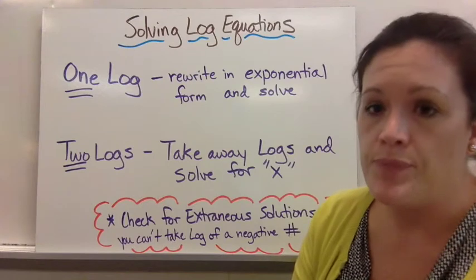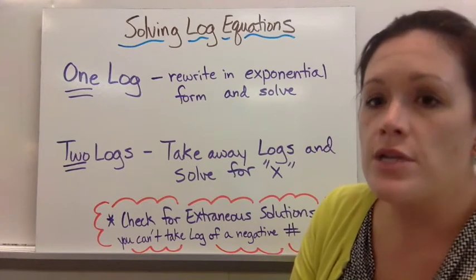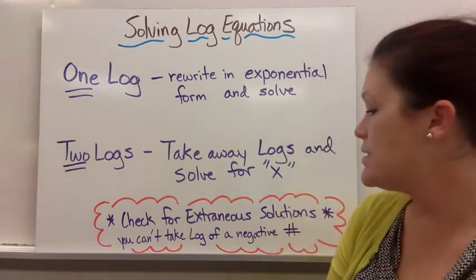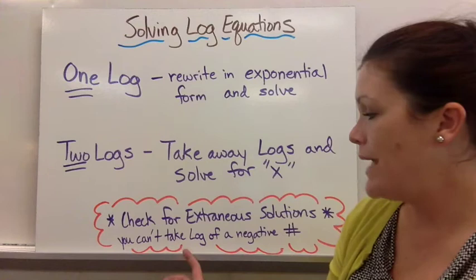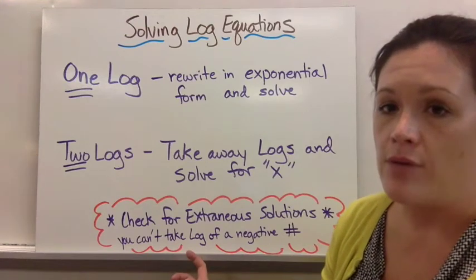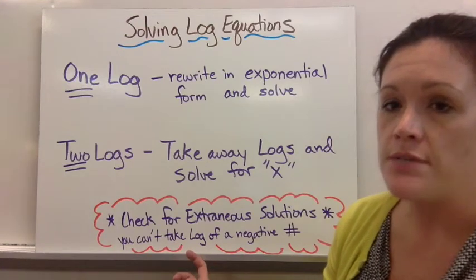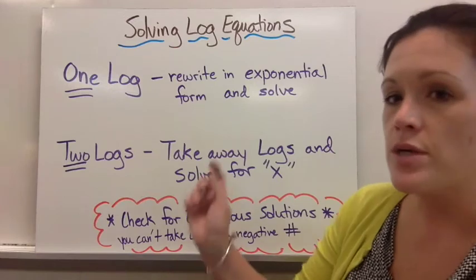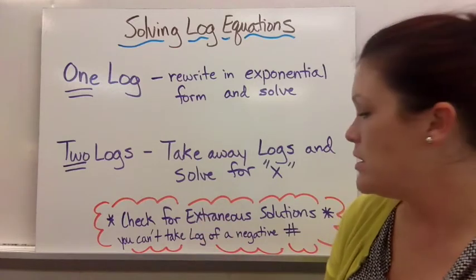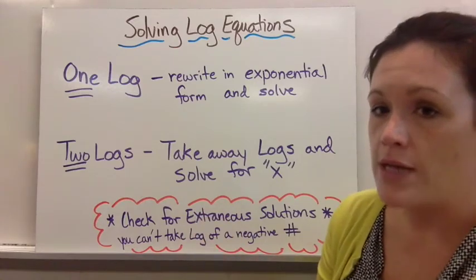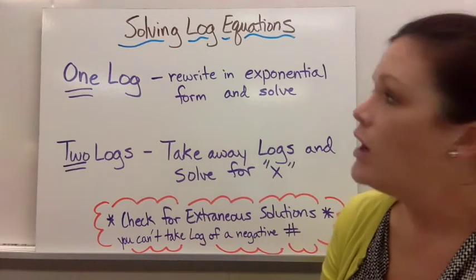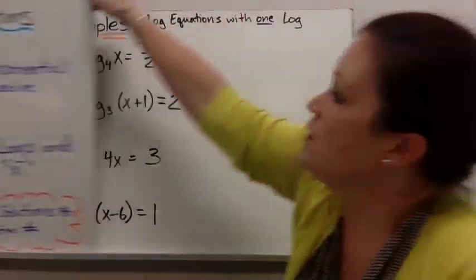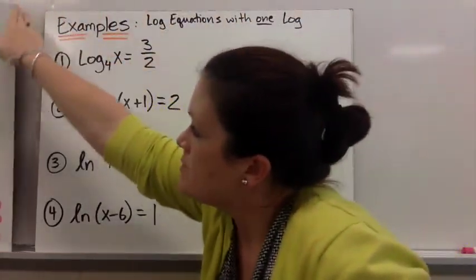We're going to look at some examples. In these equations you do have to check for extraneous solutions, because you can't take the log of a negative number. You have to check to make sure your solution doesn't make it so that in the original equation you were taking the log, or the natural log, of a negative number.